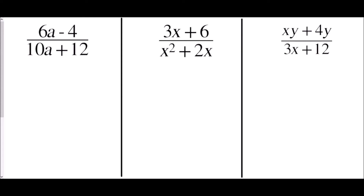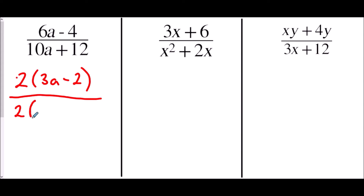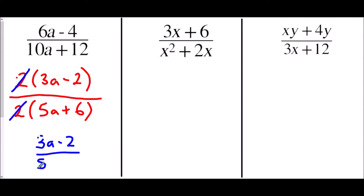In the next set of examples we may need to factorise both the top and bottom of our fractions. In the first one, (6a − 4) over (10a + 12): the common factor of 6a and −4 is 2, giving 2(3a − 2). On the bottom, the common factor of 10a and 12 is also 2, giving 2(5a + 6). The 2s cancel, simplifying to (3a − 2) over (5a + 6).